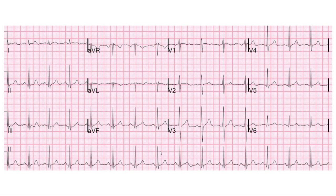The next thing we will look for is the axis. You can find the axis of QRS by looking at lead 1 and AVF. Normally the QRS in both lead 1 and AVF is upright or positive. If QRS is positive in lead 1 and negative in AVF, it shows left axis deviation. A negative QRS in lead 1 and positive in AVF means right axis deviation. In cases where QRS is negative in both lead 1 and AVF, it means extreme right axis deviation.